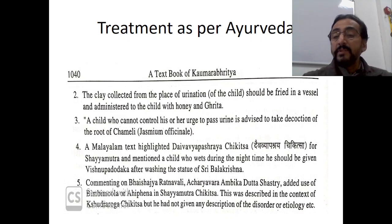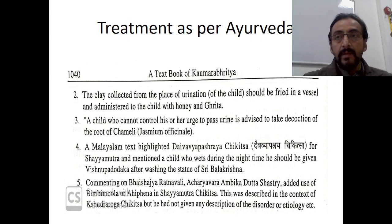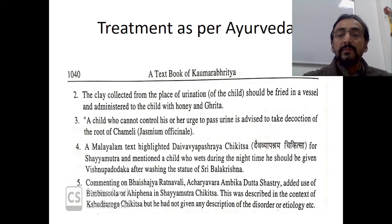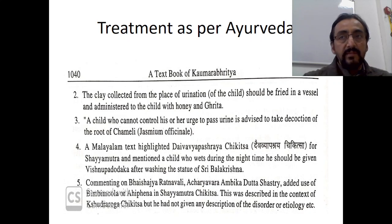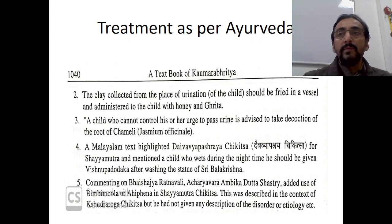A Malayalam text highlights Daiva Vapashaya Chikisa for Shaiya Mutra: a child who wets during the night should be given Vishnu Paduodaka — the holy water used to wash the statue of Lord Balakrishna. Such traditional practices are still followed in village areas, including giving tirthas and vibhutis. These reflect the role of the mind, confidence, and positive reinforcement in the successful management of nocturnal enuresis.